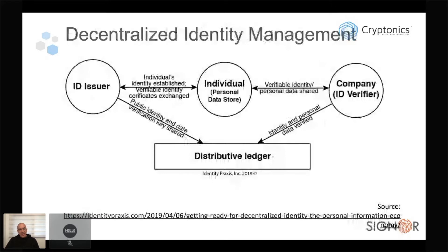The idea of decentralized identity management, which is essentially what self-sovereign identity uses, is to replace the federated identity provider with a distributed ledger — a blockchain. We've removed the centralized source of failure or security incident. The blockchain never stores the private information we need to identify ourselves with — that's moved back to the users. In the definition of self-sovereign identity, the users are in full control of this data, stored in their identity wallet.